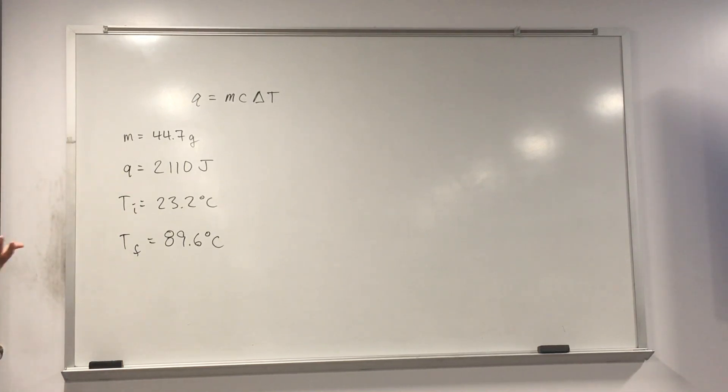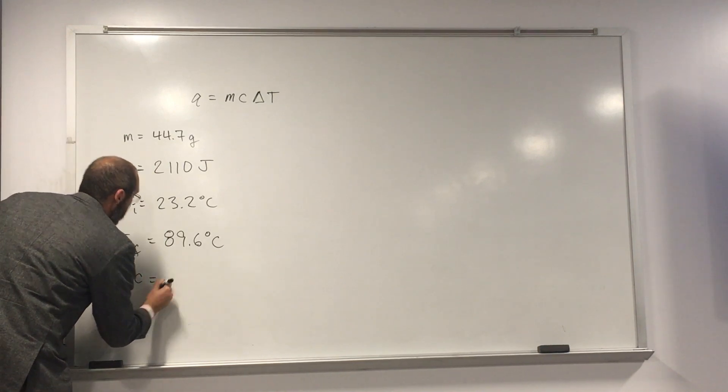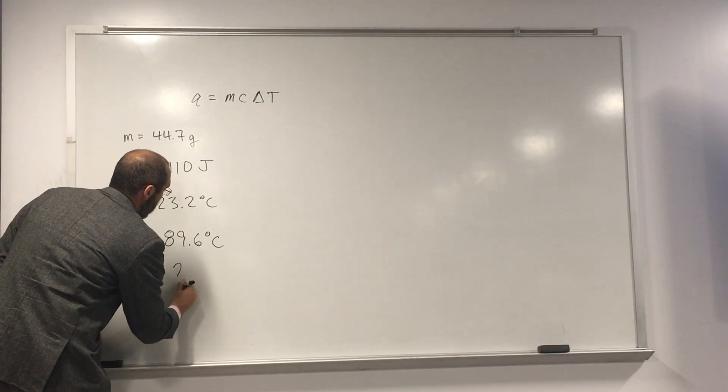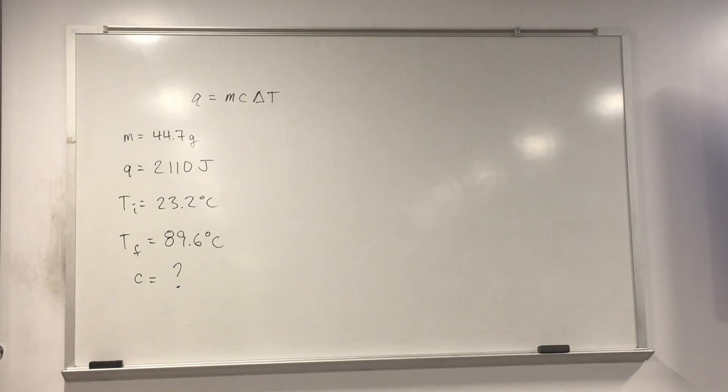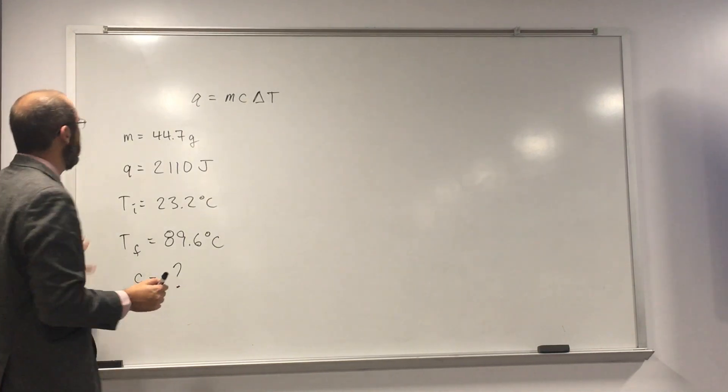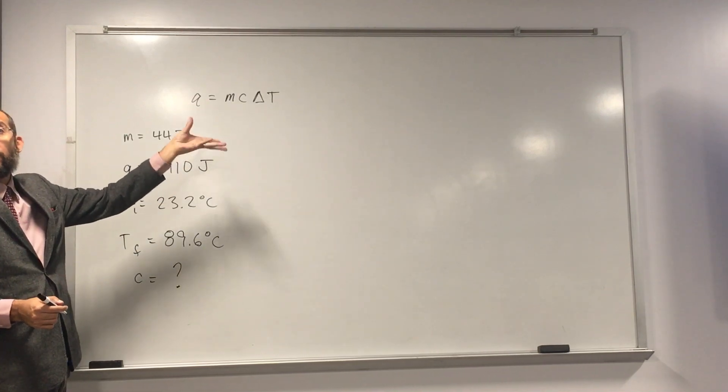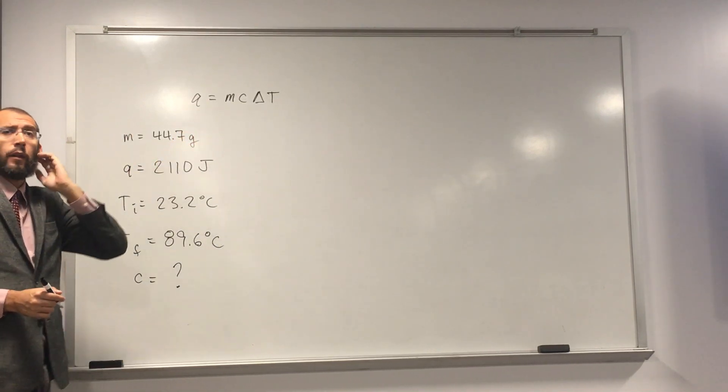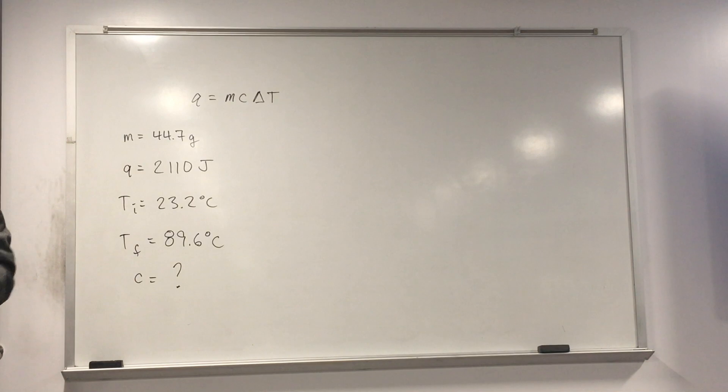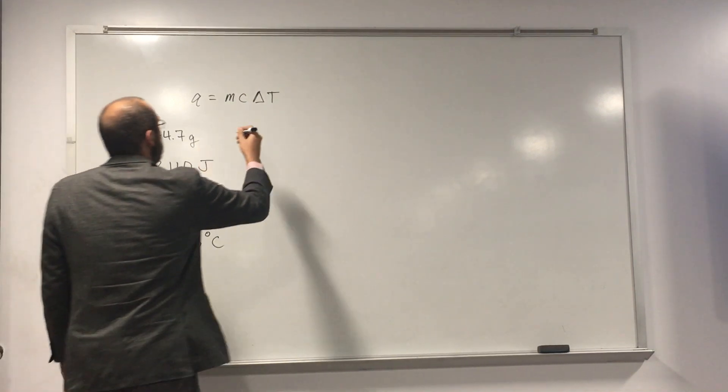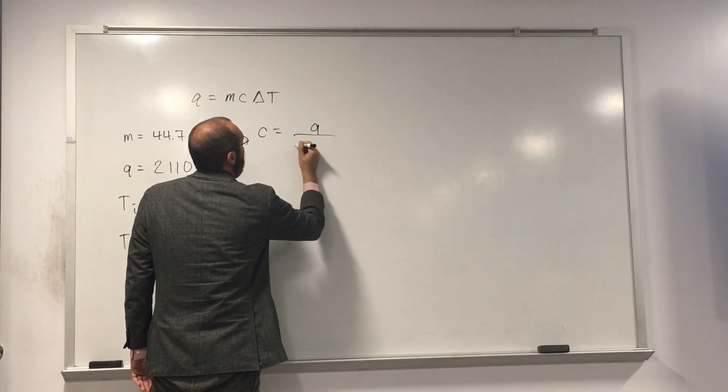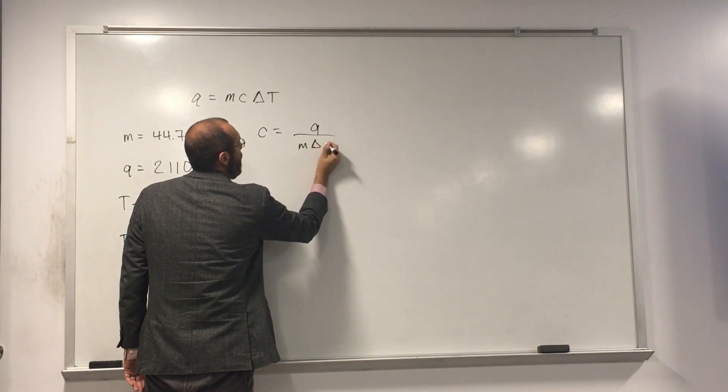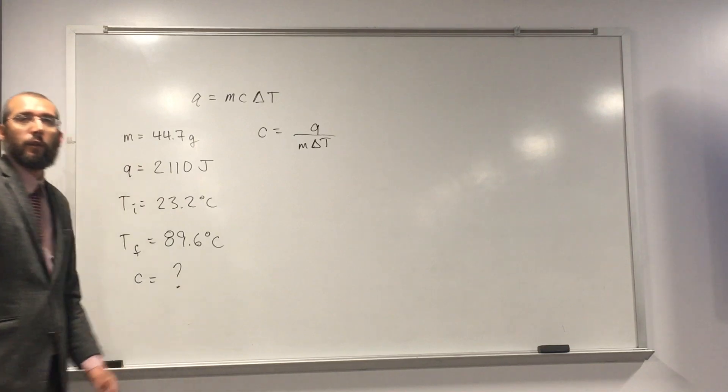So hopefully, by looking at this, we can see that we need specific heat. And of course, part A asked us to solve for that. So in order to do that, what do we have to do? We have to rearrange this equation to solve for C. So what would the new equation be? So C equals Q divided by M, yeah, delta T. Very good.